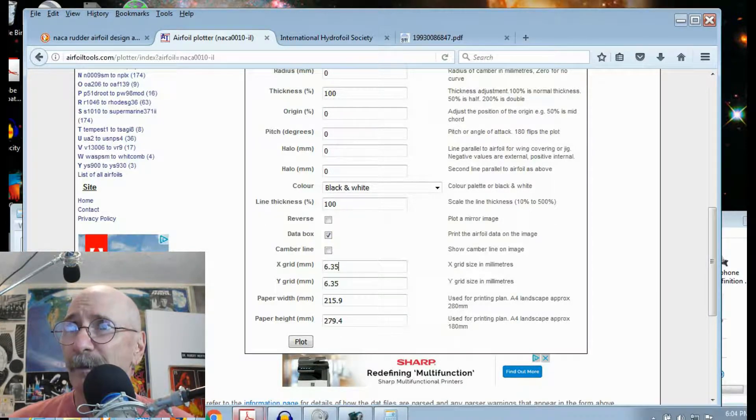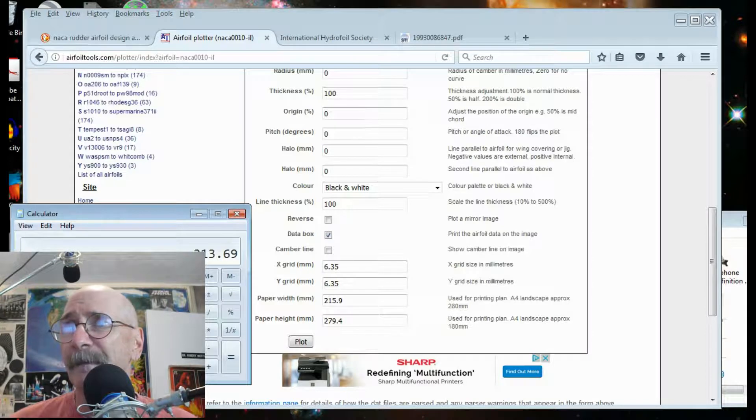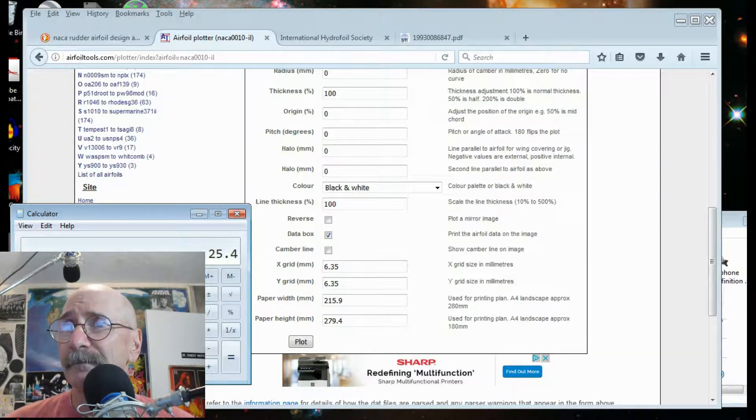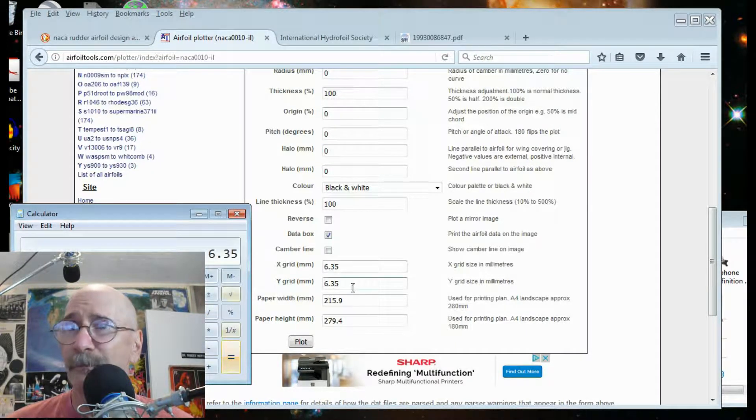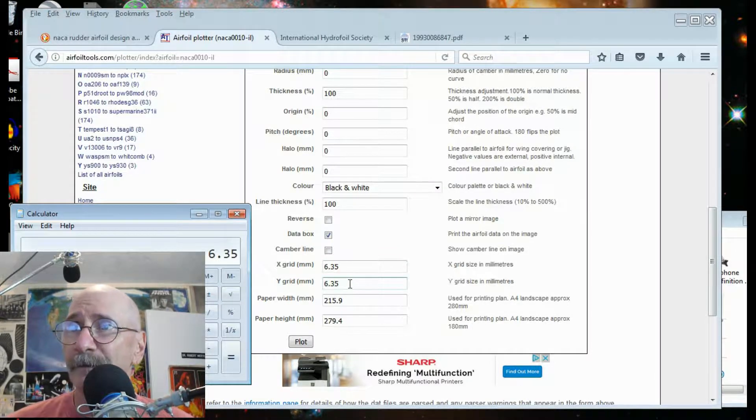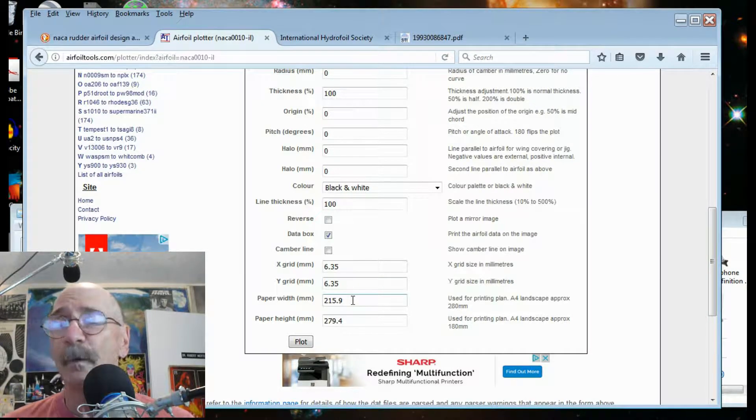The grid we've broken down to 6.35. And the 6.35 basically is a quarter inch. So 1 inch is 25.4 millimeters per inch, divide by 4 gives me 6.35. That gives me an X grid and a Y grid of 1 quarter inch. That's what I'm going to try to work in.